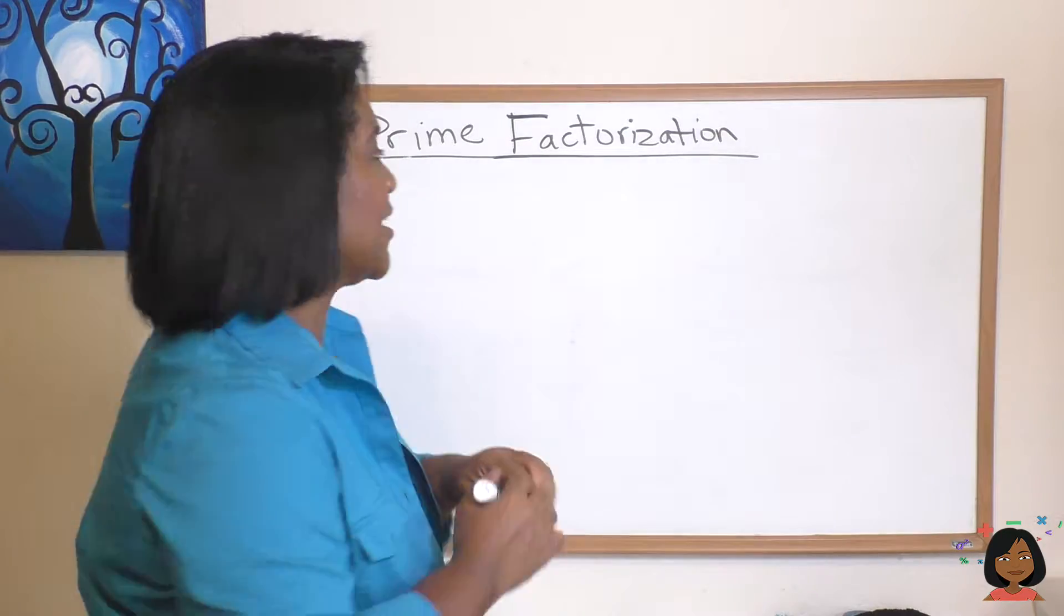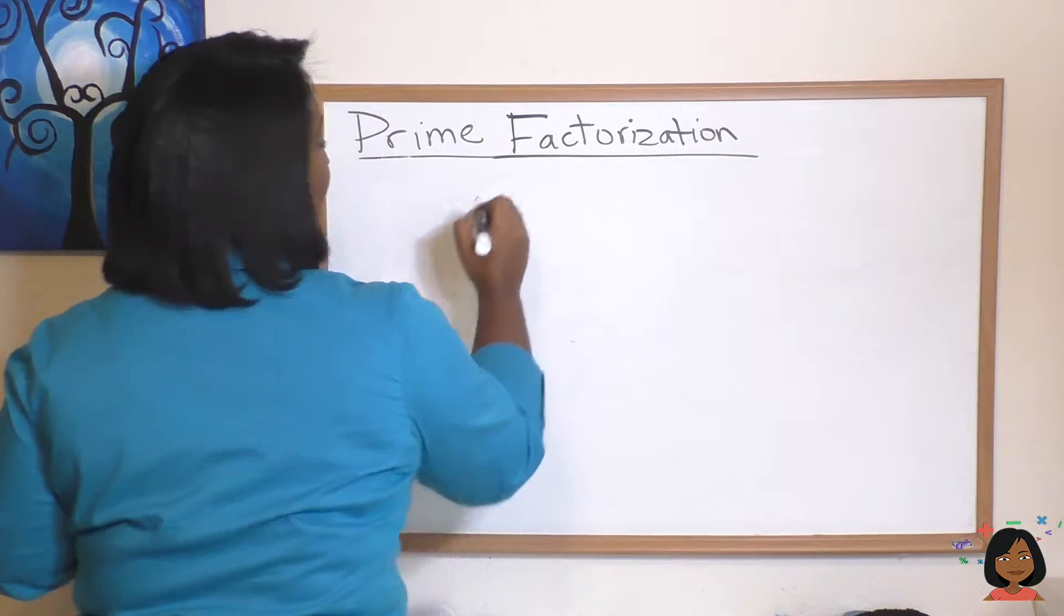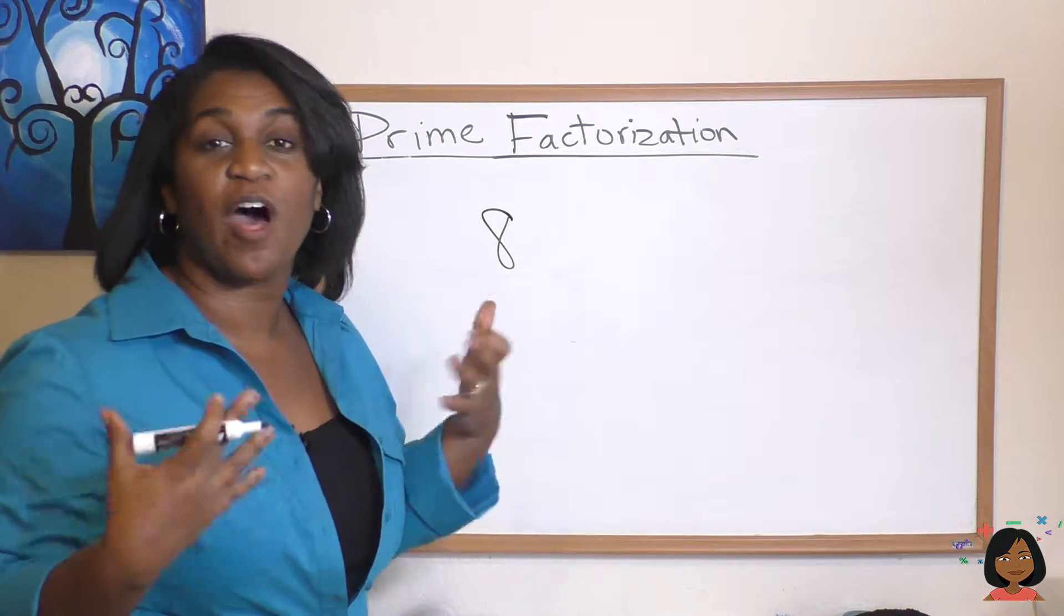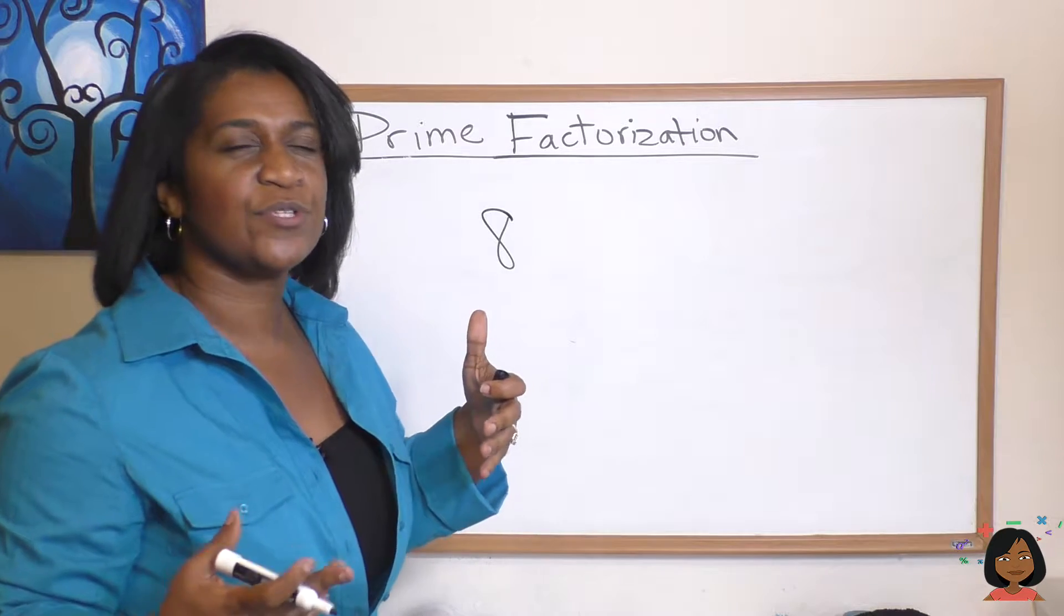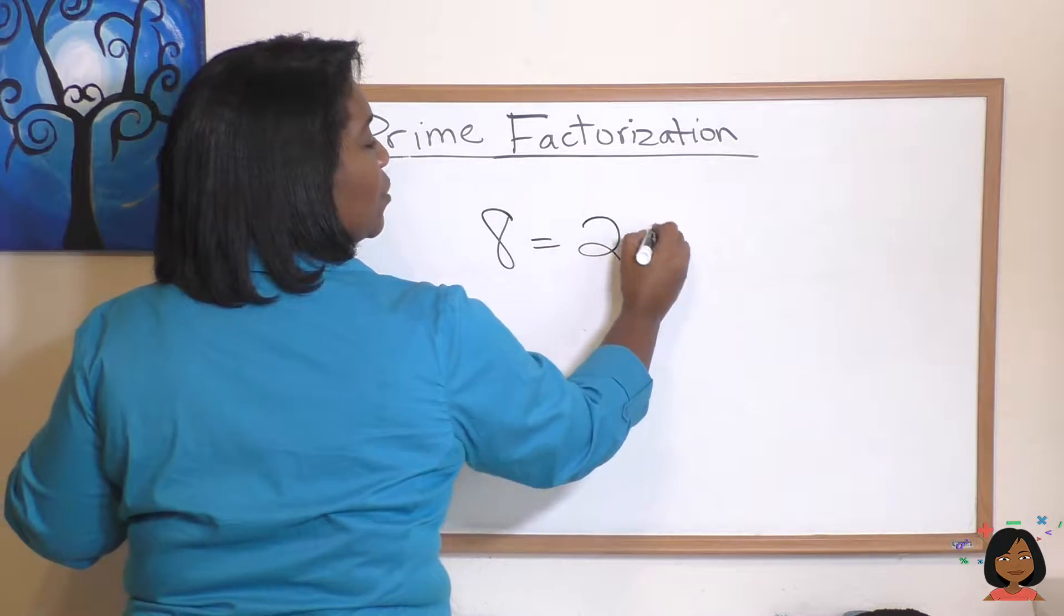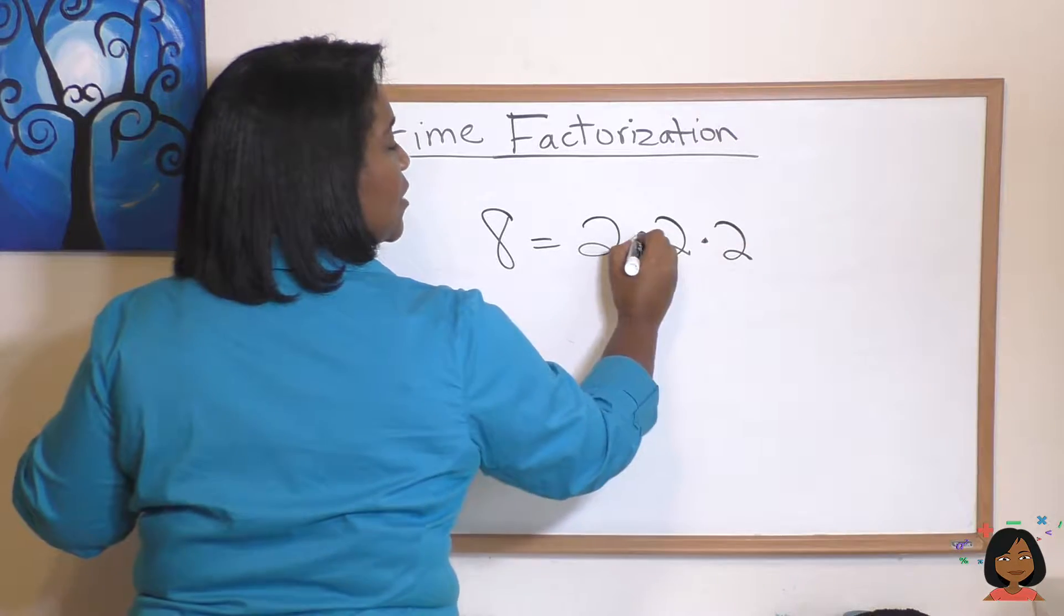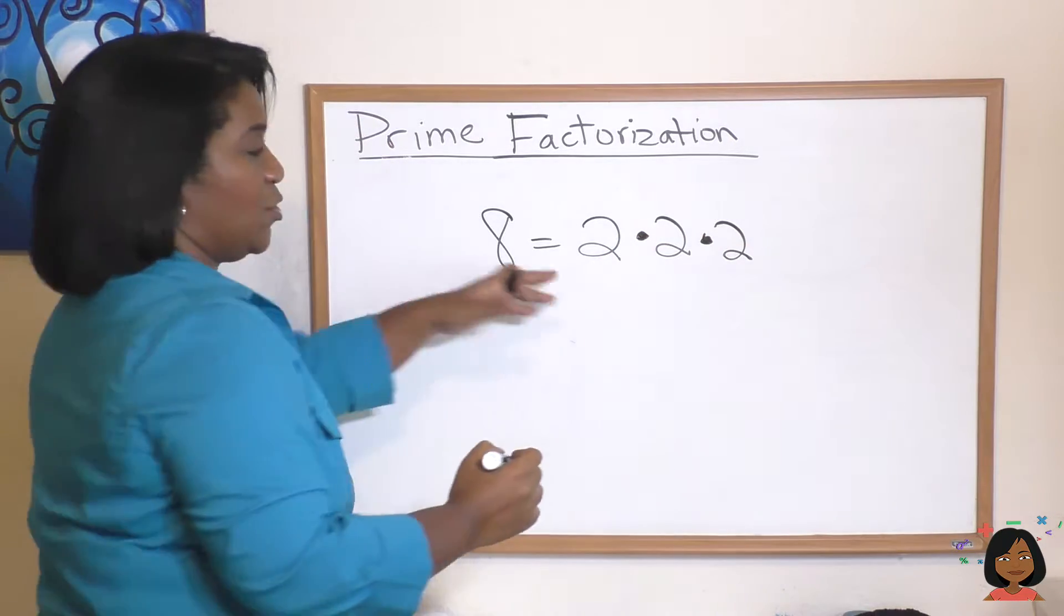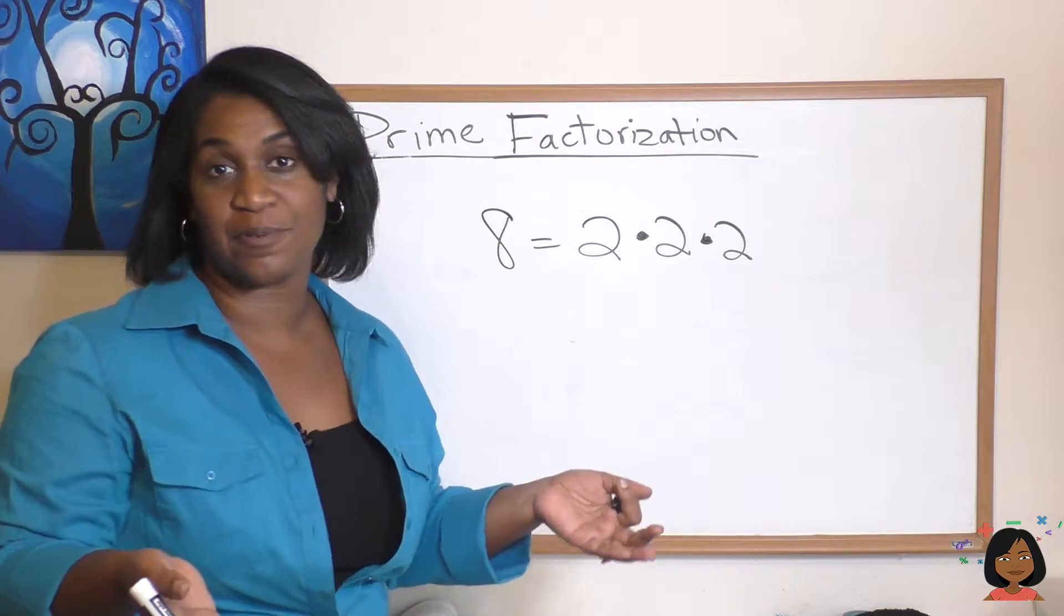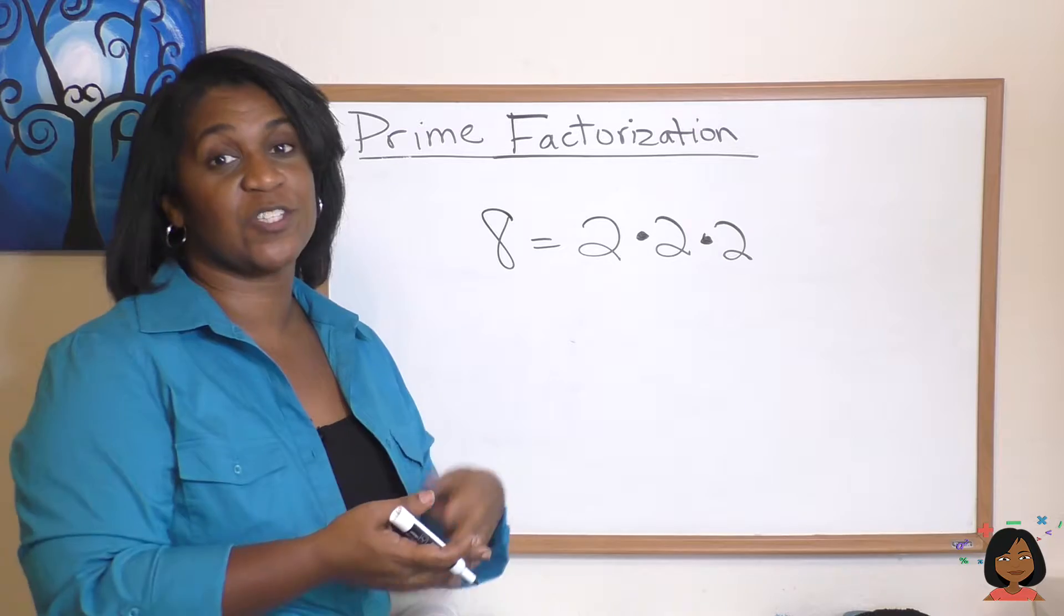Take a look at an example. Let's say I had the number eight. I can compose eight with other prime numbers. Eight is the same thing as saying 2 times 2 times 2. Two times 2 is 4, 4 times 2 is 8, and look at that, my twos are prime numbers.